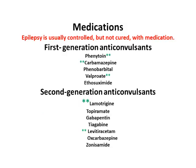Antiepileptic medications are generally classified into first-generation and second-generation anticonvulsants. First-generation anticonvulsants were discovered before 1990 and include: phenytoin, carbamazepine, phenobarbital, valproate (valproic acid), and ethosuximide. Second-generation anticonvulsants were invented after 1990 and include: lamotrigine, topiramate, gabapentin, tiagabine, levetiracetam, oxcarbazepine, and zonisamide. Epilepsy is usually controlled but not cured with these medications.